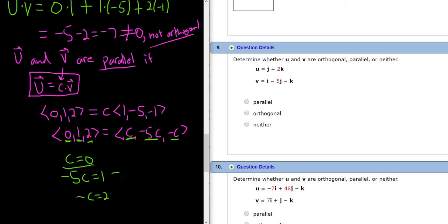So we have c equals 0. This tells us c is negative 1 fifth. And this tells us c is negative 2. Well, c can't be all three numbers, so this is impossible. So they are not parallel.